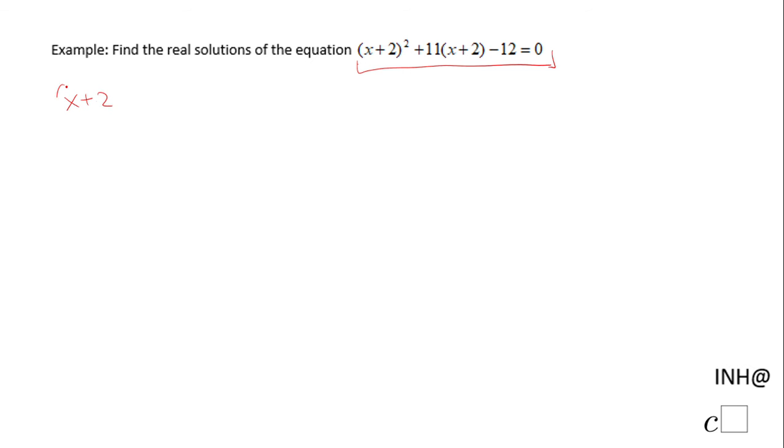The equation is (x + 2)² + 11(x + 2) - 12 = 0. So if we use this substitution x + 2 = y, what do we get?